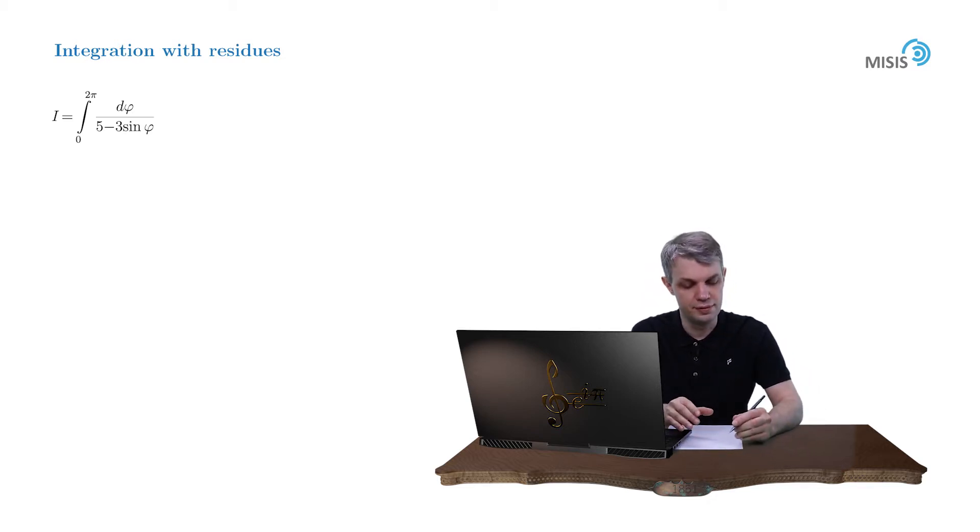Whenever you deal with trigonometric integrals with integration domain spanning the period of the integrand, you should always try the exponential change of variables. The aim of this change is to turn your segment of integration into a closed contour. Let's try the change of variable z equals e to iφ.